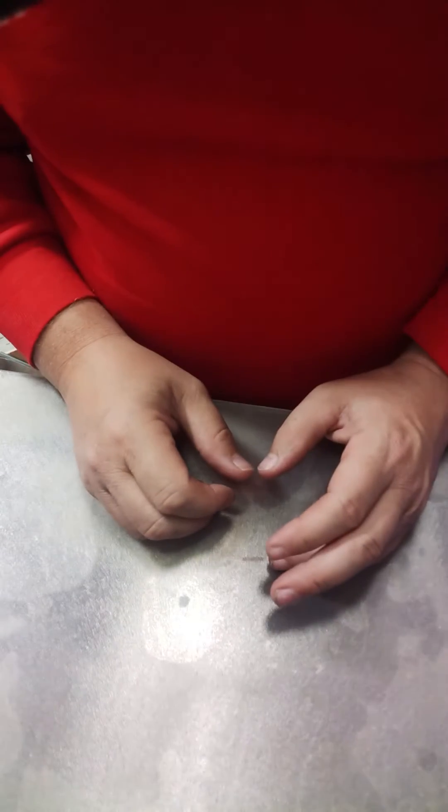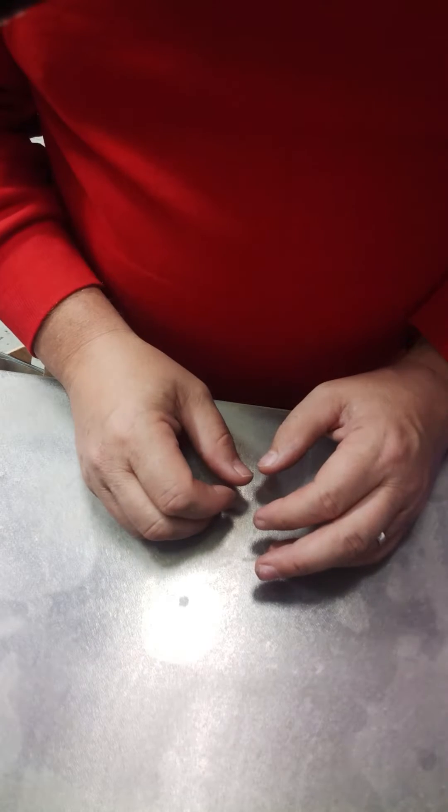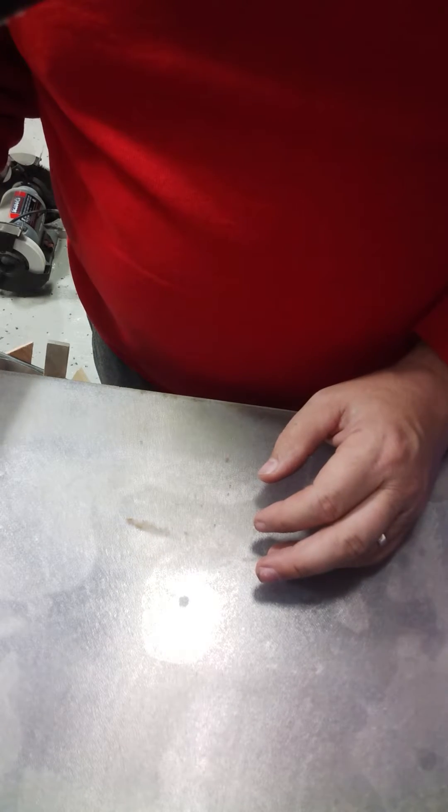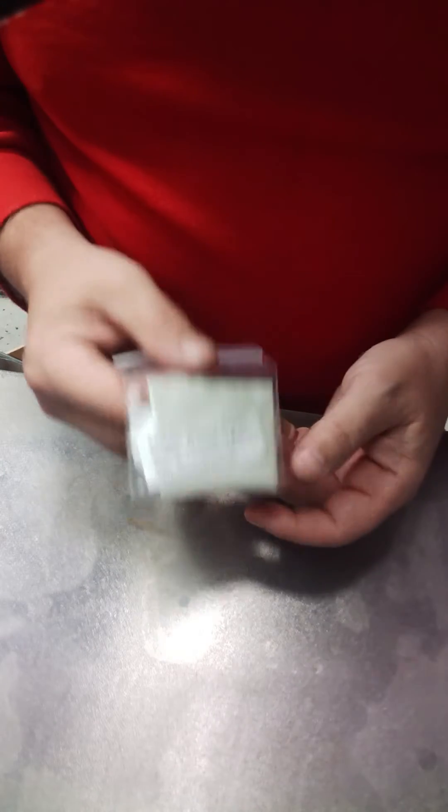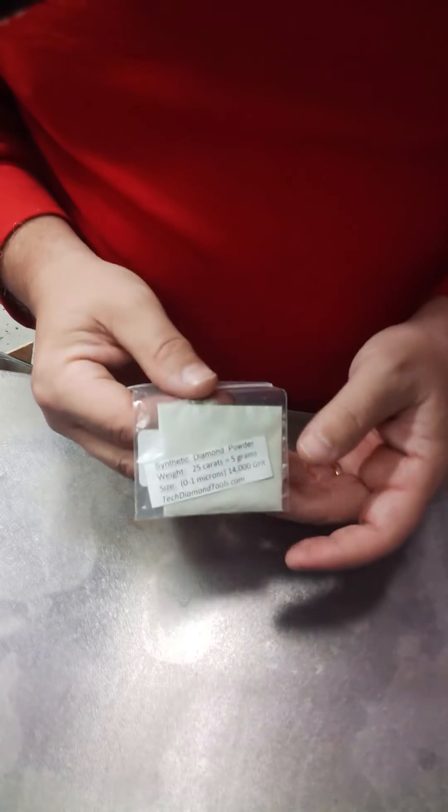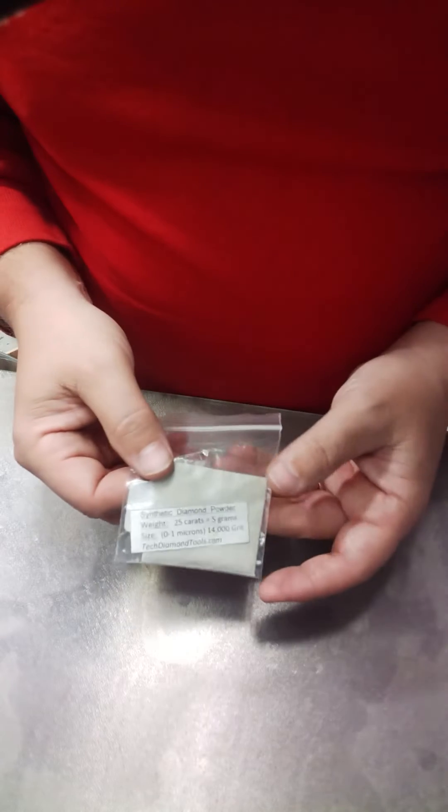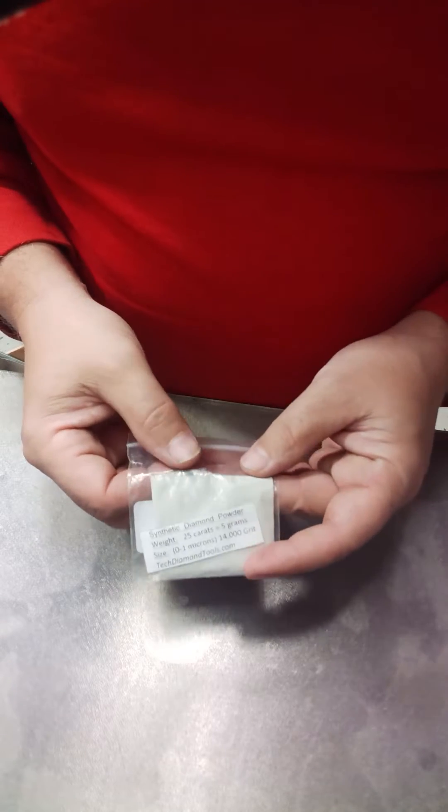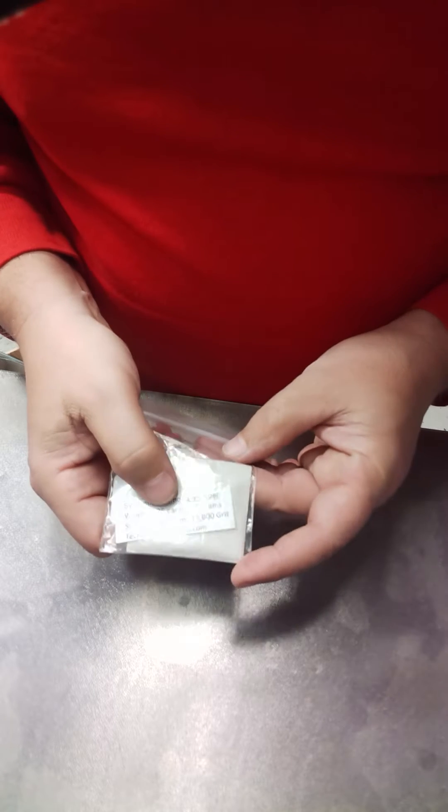Okay, today I wanted to talk to you about how I make diamond spray solution. You can get lapping diamond, monocrystalline. In this case I've got zero to one micron, so I'll treat this as one micron diamond spray. They come in packets of 25 carats, or in other words, five grams of diamond powder.